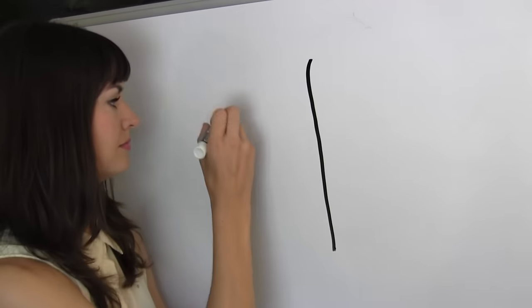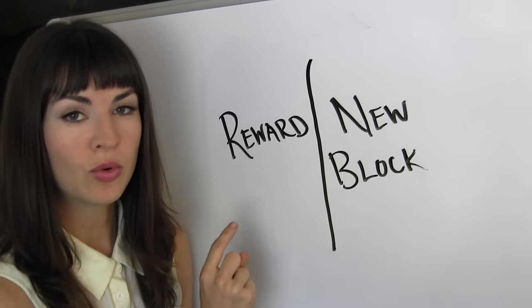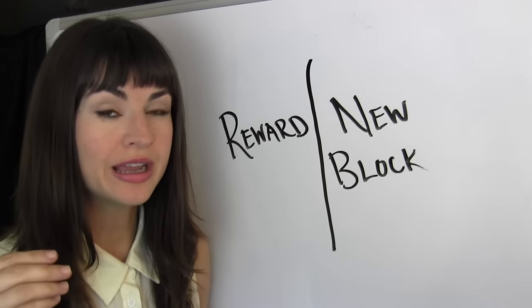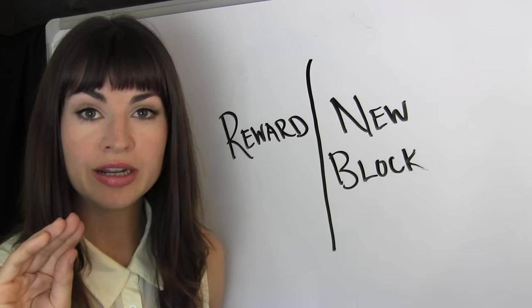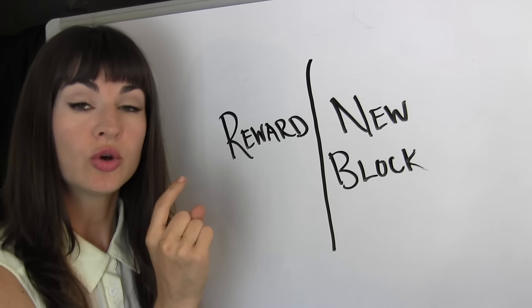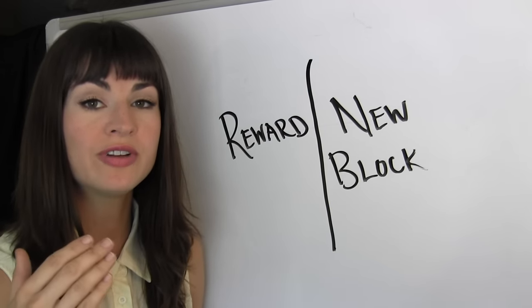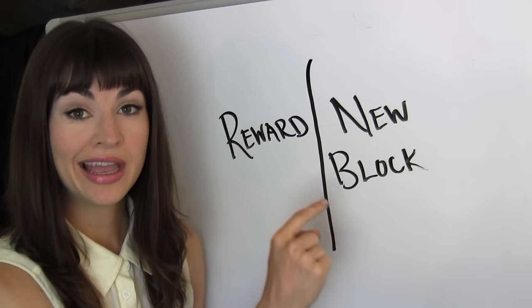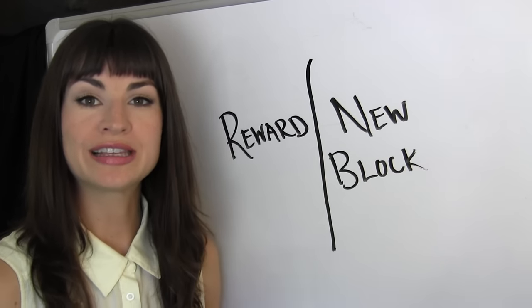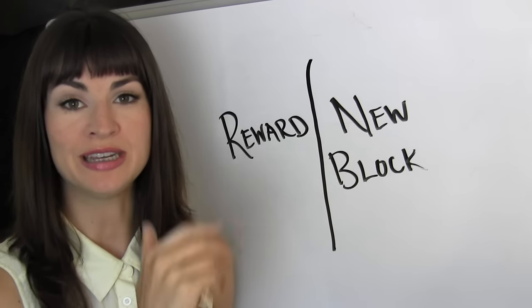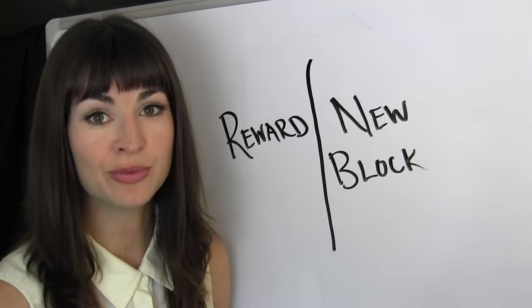And what happens when a miner solves the math problem? Well, two things happen actually. First, is that he gets a reward of newly created coins on the blockchain. Yes, I am not kidding. Newly created coins on the blockchain are paid to the miner who solved the math problem as a reward for proving his work. And secondly, he's the one who gets to create the next block. Or in other words, he's the one who gets to publish the next update to the ledger, containing all of the transactions that happened in the last few minutes.